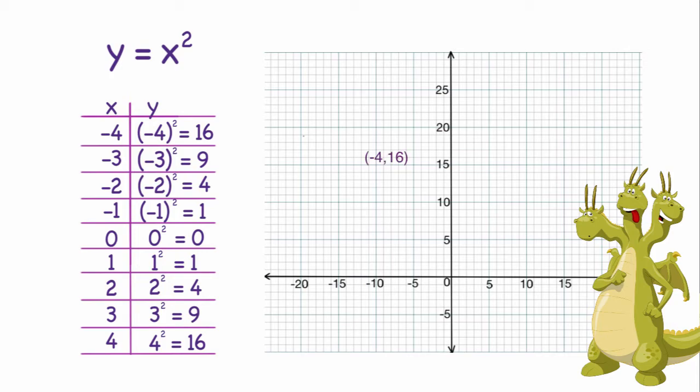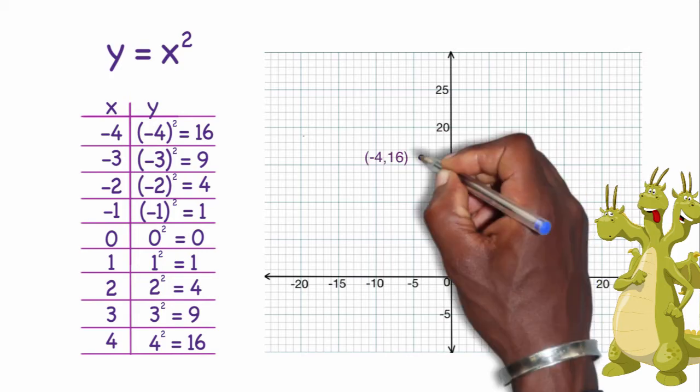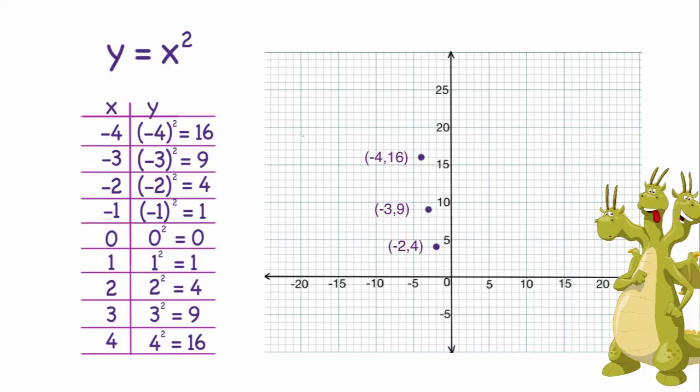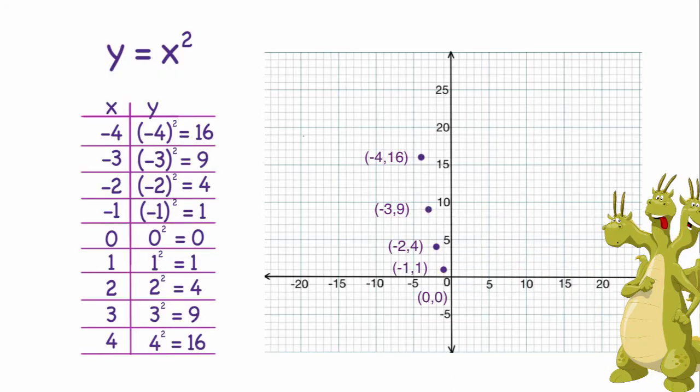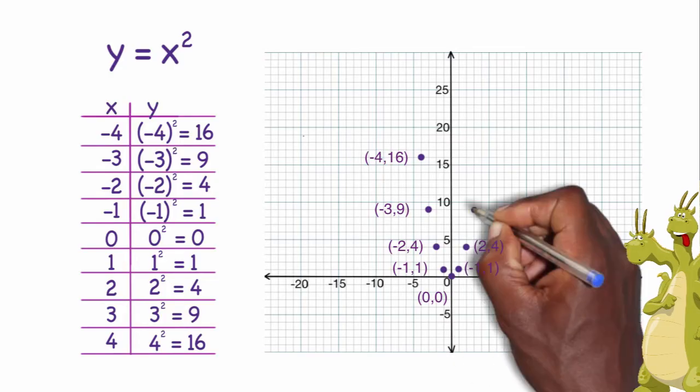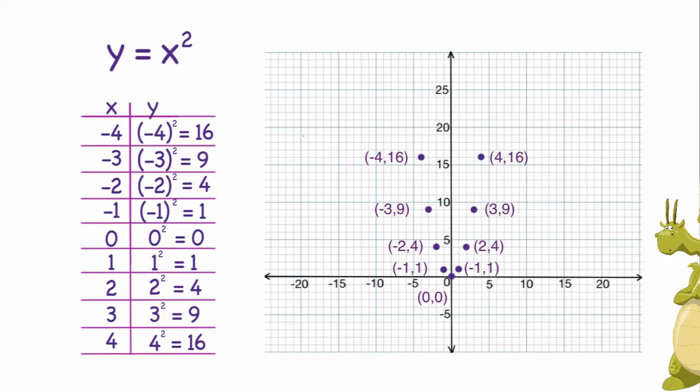Negative 4, 16. Go to the left 4 and up 16. To the left 3 and up 9. To the left 2 and up 4. To the left 1 and up 1. 0, 0, 1, 1, 2, 4, 3, 9, 4, 16.